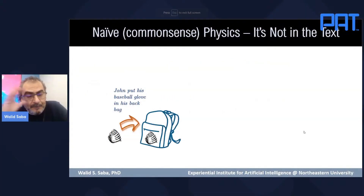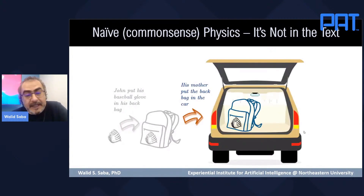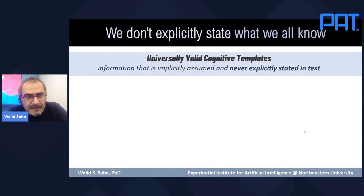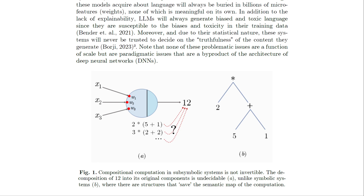A top-down strategy requires having access to a set of general principles to start with. However, this approach contradicts how our minds externalize thoughts in language. It's important to note that LLMs are not just models of language, but rather statistical models that capture the regularities found in linguistic communication. LLMs lack explainability because they lack structured semantics and reverse compositionality — a limitation that is a byproduct of their underlying architecture, which is based on deep neural nets. Since deep neural nets do not support symbolic representations, LLMs fail to make correct inferences in intentional contexts.